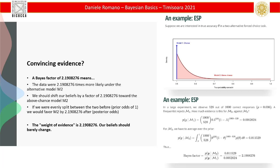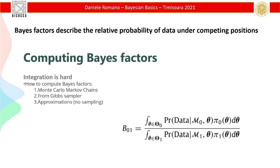If my prior beliefs were on the zero — I have to update — I have two times more reasons that it's under the other model. Is it a lot to shift my beliefs? That's what the Bayes factor answers. The weight of evidence is about two times better under one hypothesis than the other. We have now more or less standards, but the point is this number reflects an intuitive way of comparing two models, because it's odds of probability of one model over the other.